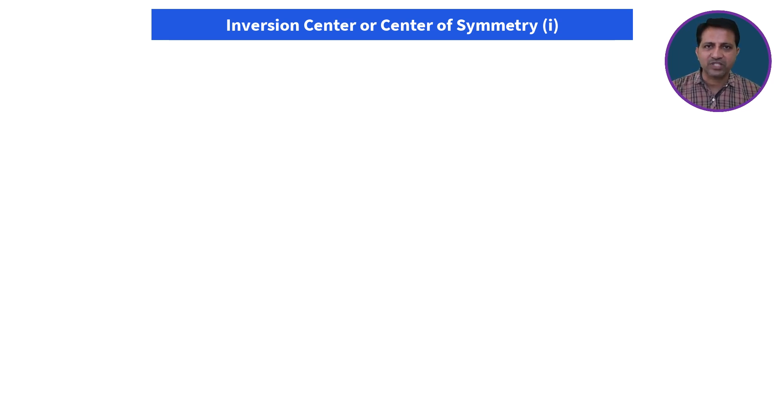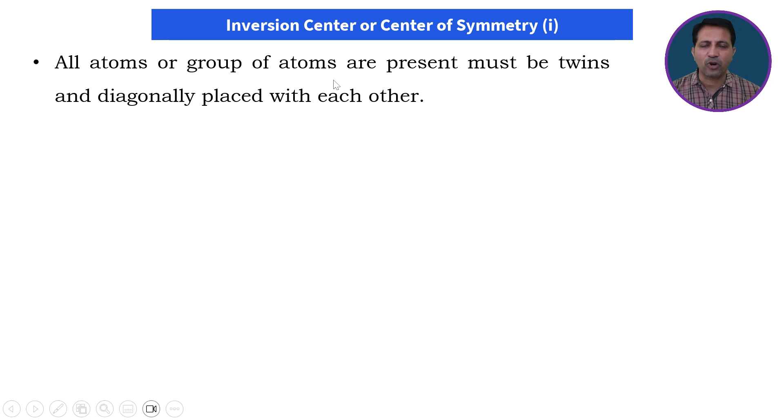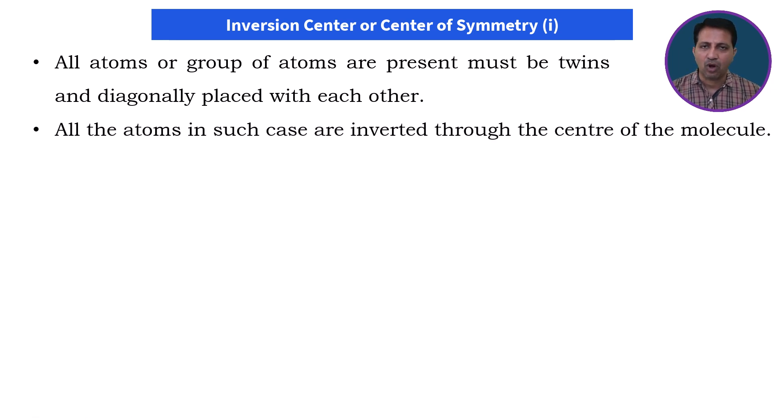Inversion center or center of symmetry is represented with the symbol small letter i. In this case, all atoms or group of atoms present must be twins and diagonally placed with each other. All the atoms in such case are inverted through the center of the molecule.